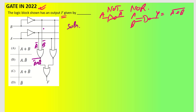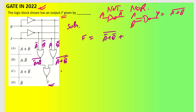The output of the first NOR gate will be (Ā + B̄) bar. For the second gate, the inputs are A and B̄, so the output will be (A + B̄) bar. So F is going to be: the NOR of (Ā + B̄) bar and (A + B̄) bar — meaning the whole thing is NORed together.